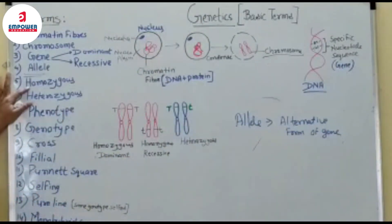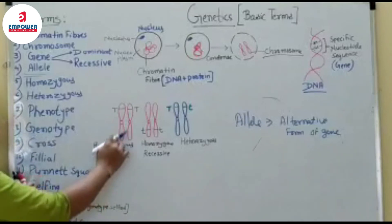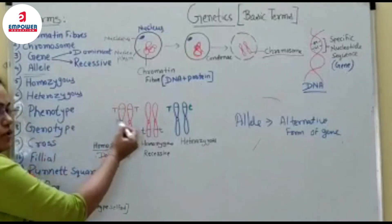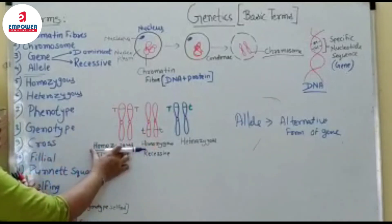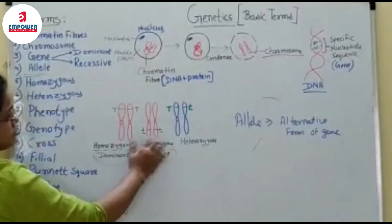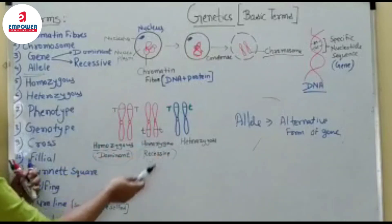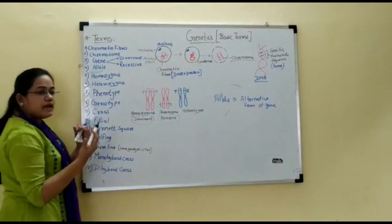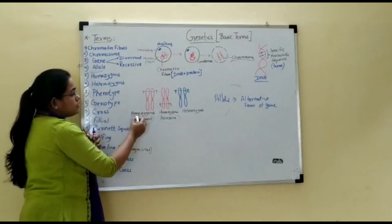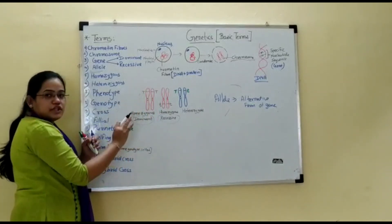Now the next point: what is homozygous and what is heterozygous? Homo means same. Here the term homozygous is used because two identical genes are present at the same locus. Can you notice something in this figure? Here we have capital T capital T, and here small t small t. Dominant genes are represented by capital letters, so capital T capital T is homozygous dominant, and small t small t is homozygous recessive.